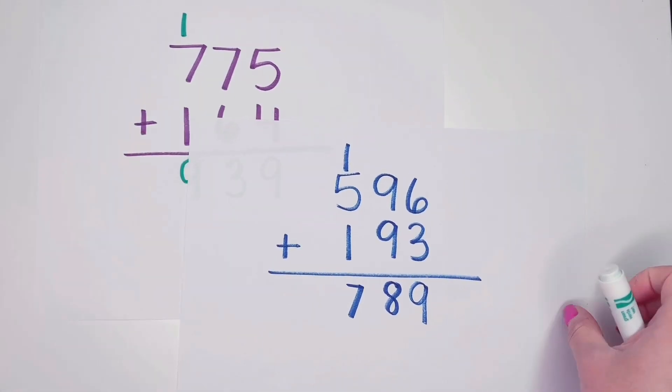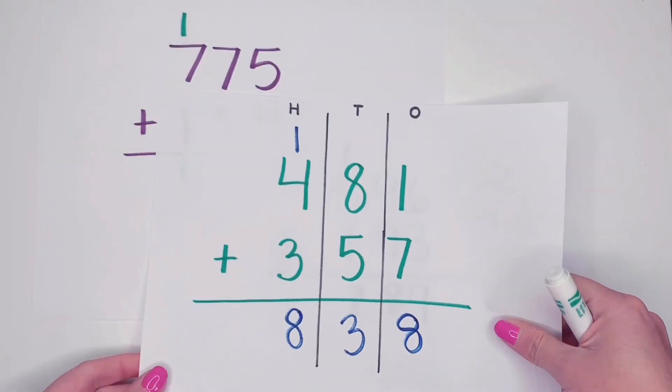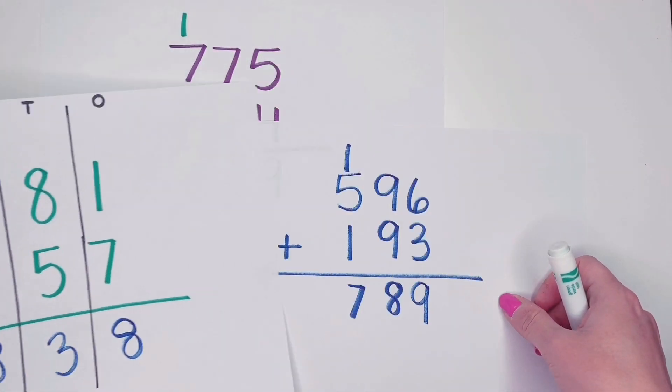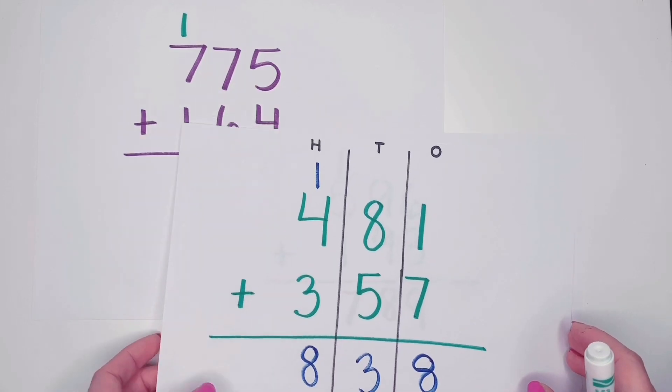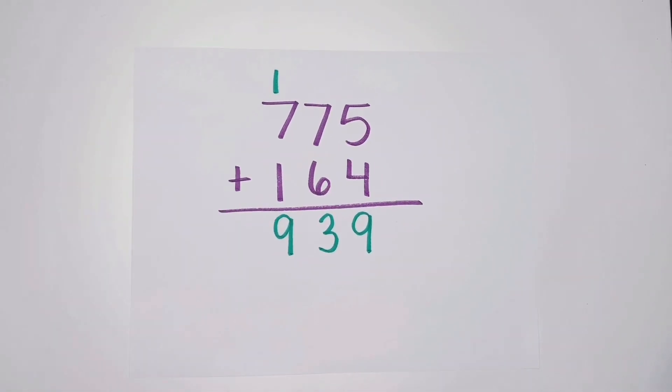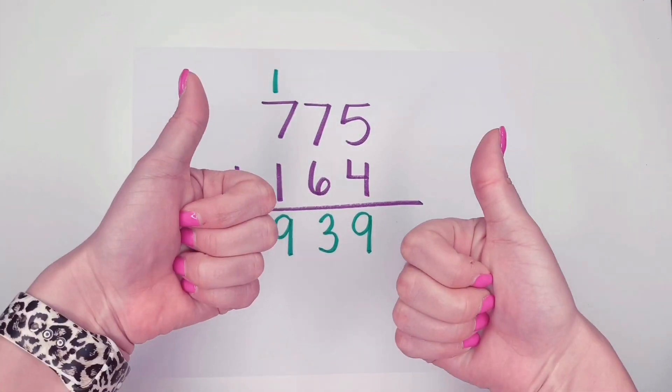So there are a few examples that we've done together to show how the standard algorithm works for adding three-digit numbers. Now I'm going to have you work in Seesaw to try some of these problems on your own. I'll see you later. Bye.